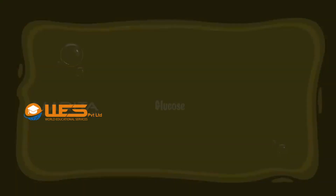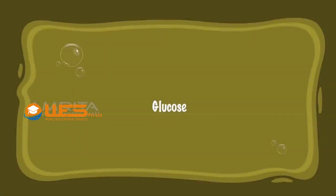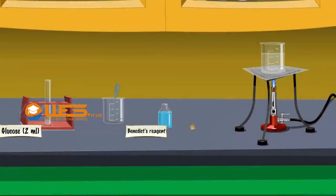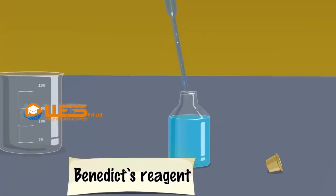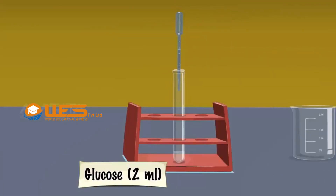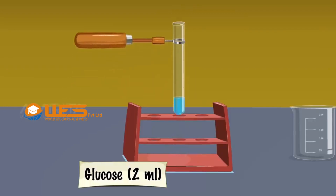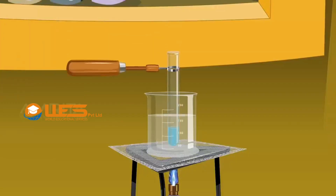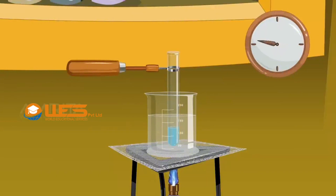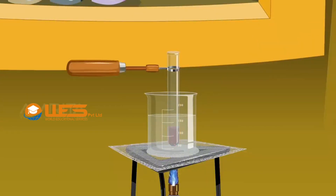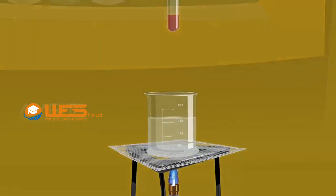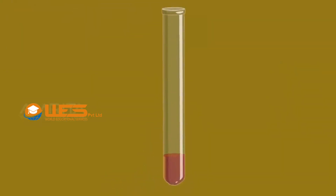Benedict's Test. Glucose. Take 2 ml of Benedict's reagent in a dropper. Add it to 2 ml aqueous solution of glucose taken in a test tube. The colour of the solution turns blue. Remove the test tube from the rack using a test tube holder. Place it in a boiling water bath and heat for a few minutes. Glucose is a reducing sugar that reduces the Cu²⁺ ions in the test reagent to a red precipitate of copper oxide.